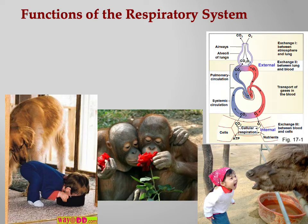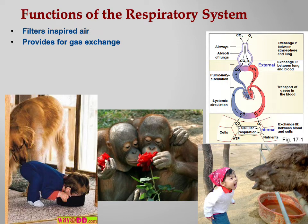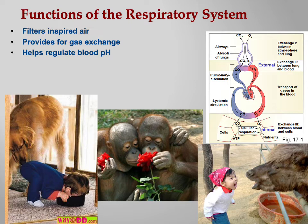What else does the respiratory system do beyond getting oxygen in and CO2 out? It filters the air — that's what nose hairs and mucus are for, along with associated lymphatic tissue (the MALT). It provides gas exchange, of course. It also helps regulate blood pH — the respiratory system is one of two systems that regulate pH, the other being the urinary system. In fact, we'll talk about respiratory acidosis and respiratory alkalosis — the respiratory system can cause or attempt to correct acid-base problems.